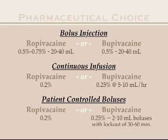Adhesive capsulitis or frozen shoulder, on the other hand, would require a small volume and low concentration of initial bolus drug, since motor function and patient participation in physical therapy is desirable. This is followed by a low infusion volume of a low concentration drug, but higher volume and concentration patient-controlled boluses for physical therapy sessions. It is also desirable to have a higher infusion volume at nighttime without patient-controlled boluses, and a lower infusion rate with higher patient-controlled boluses during daytime.